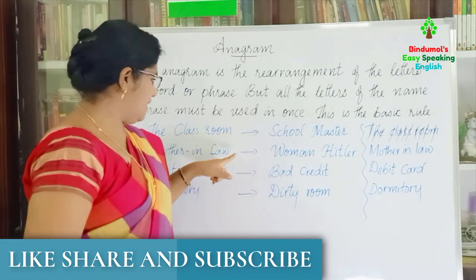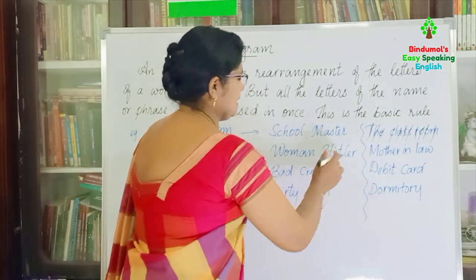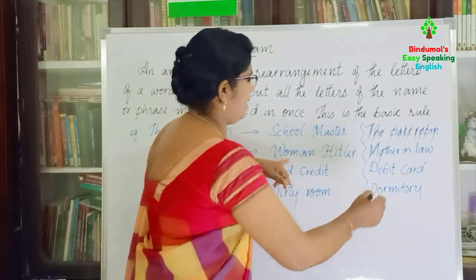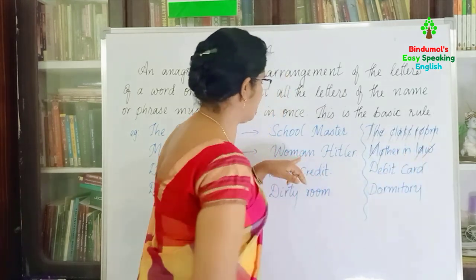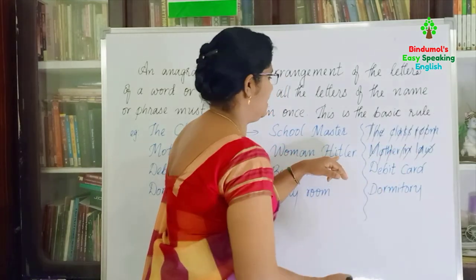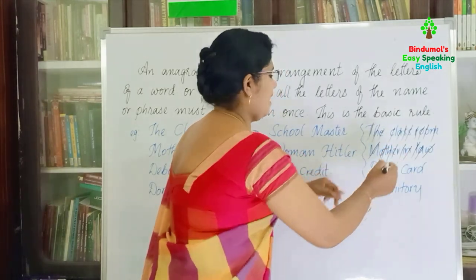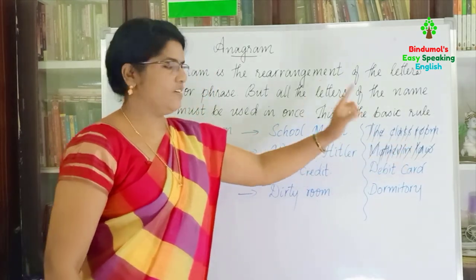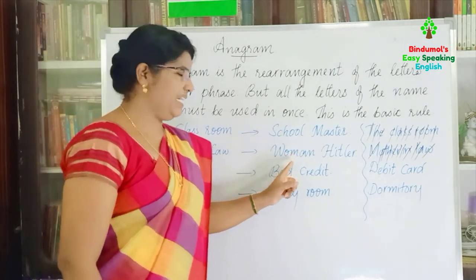See this one. From 'mother-in-law' we take the letters W, O, M, A, N, H, I, T, L, E, R — all the letters taken once — and we got 'woman Hitler.' So from the word 'mother-in-law' we got 'woman Hitler.'